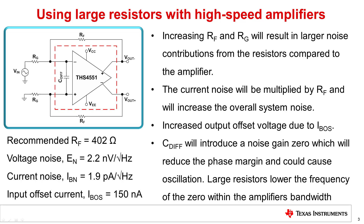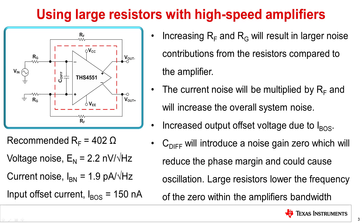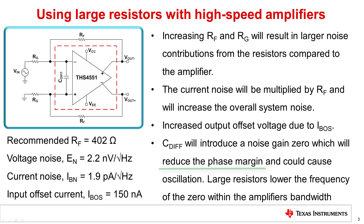The current noise contribution will also increase as RF is increased. In the case of the THS4551, if RF is set to 1 kilo-ohm, the current noise contribution at each amplifier's output will be 1.9 nV per root hertz. Increased resistance also increases the DC offset contribution due to the amplifier's input bias offset current. Finally, the feedback resistance and the amplifier's input capacitance, along with any PCB parasitic capacitance, will result in a noise gain zero, which tends to reduce the amplifier's phase margin. This effect will be studied in greater detail in the subsequent slides.